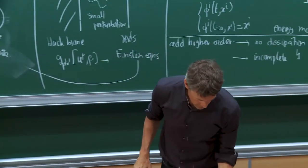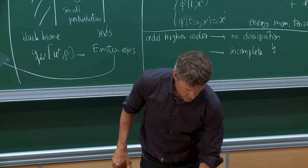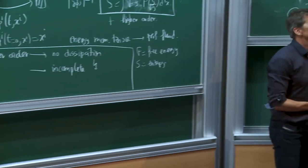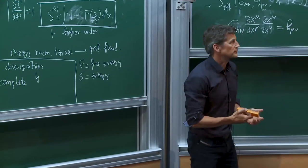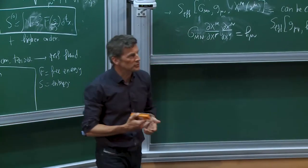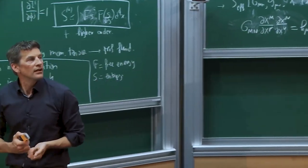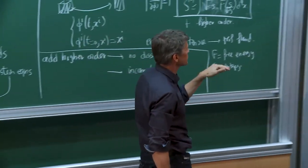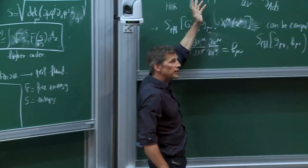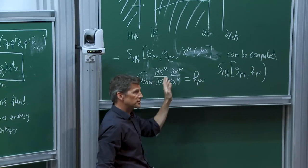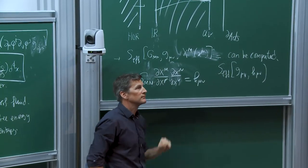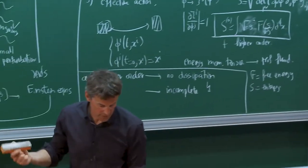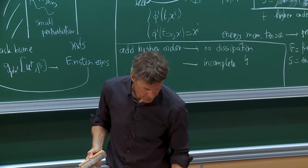The two metrics can depend on time. This is just the lowest-order part of the effective action. To compute it, you can derive this piece by taking time-independent metrics — that's enough to fix the form of the action. Then by symmetry principles it must be valid for general metrics at this order in the derivative expansion.